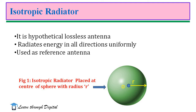That means none of the antennas radiate energy in all directions uniformly. Hence, practically isotropic radiator cannot exist. Consider an isotropic radiator placed at the centre of a sphere of radius r, as shown in the figure.